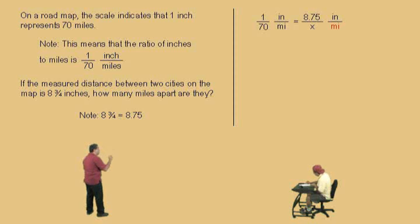And notice, we put miles in red because that's what we're trying to find. How many miles are the two cities apart on the map? And so, there's our proportion problem. 1 to 70 is equal to 8.75 to x.